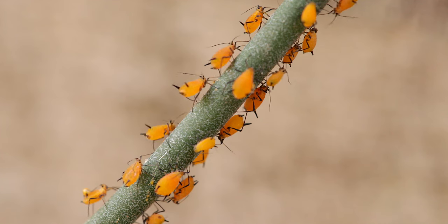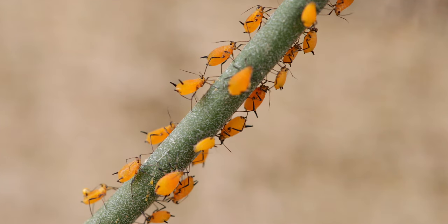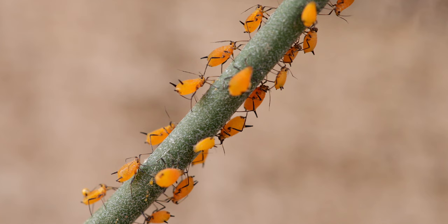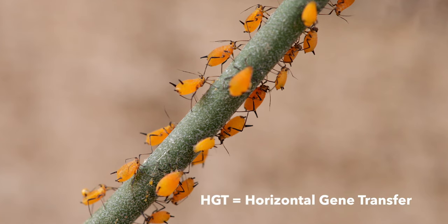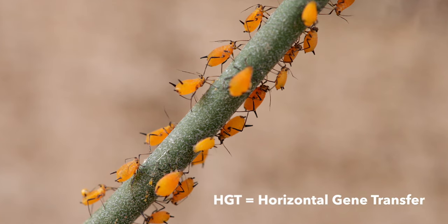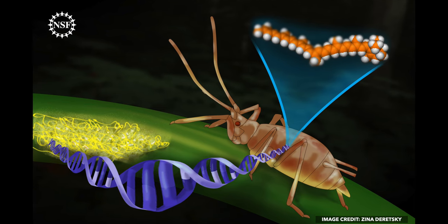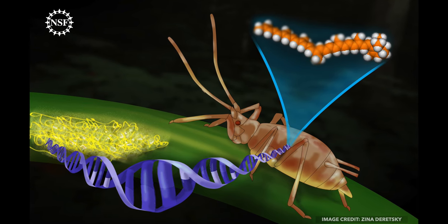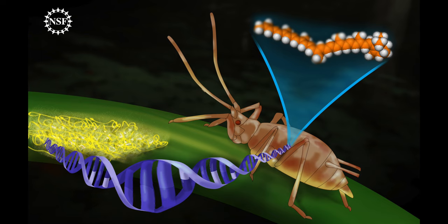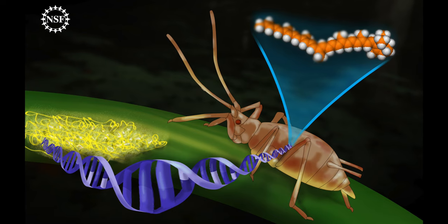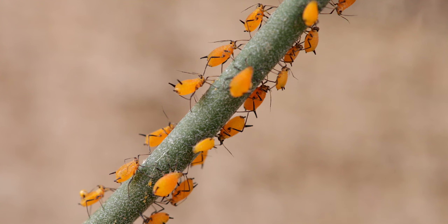Another really interesting fact is that some aphid species have acquired the ability to synthesize red carotenoids by horizontal gene transfer from fungi. Horizontal gene transfer, or lateral gene transfer, is the movement of genetic material between unicellular and multicellular organisms other than by the vertical transmission of DNA from parent to offspring.